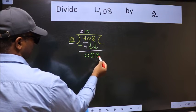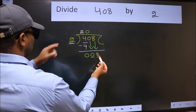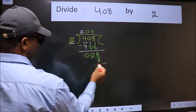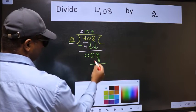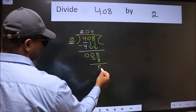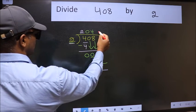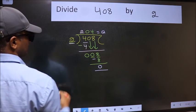Now 8. When do we get 8 in 2 table? 2 4's 8. Now we should subtract, we get 0. So this is our quotient.